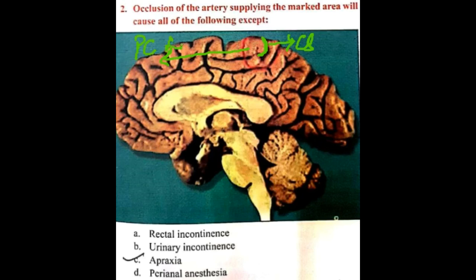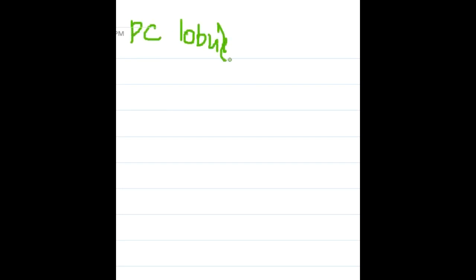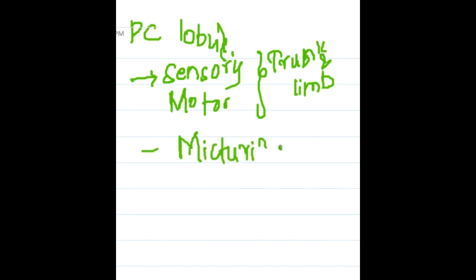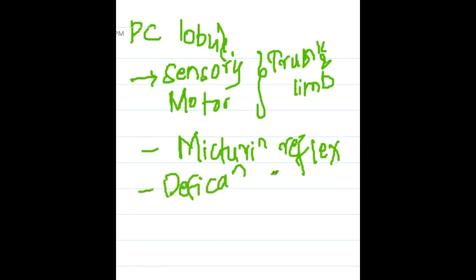Now what are the functions of the paracentral lobule? First, it gives sensory and motor supply to the trunk and lower limb, even below the knee. Next, it is the center of the micturition reflex, and it is also the center of the defecation reflex.